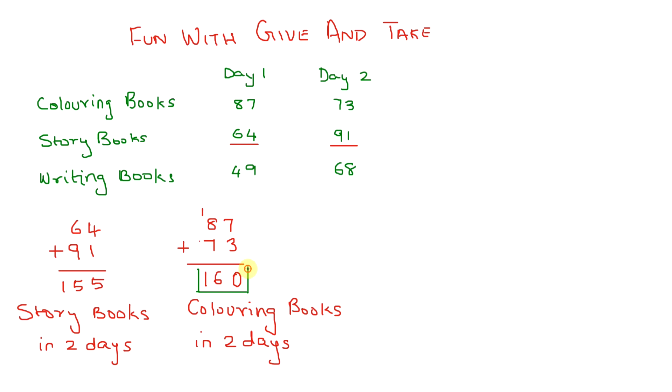Here's the last question. How many more story books than writing books do you think Priya's father sold on the second day? Let's look at the table once again. We know on the second day, Priya's father sold 91 story books and 68 writing books.